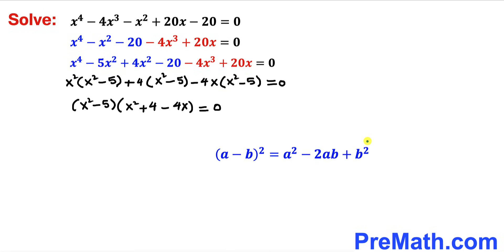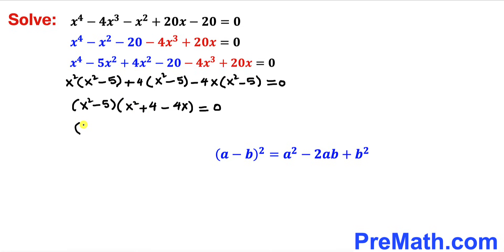Now let's focus on the famous identity: (a minus b)² equals a² minus 2ab plus b². We are going to apply this identity. The expression x² minus 4x plus 4 can be written as (x minus 2)². So our factored form is (x² minus 5)(x minus 2)² equals 0.